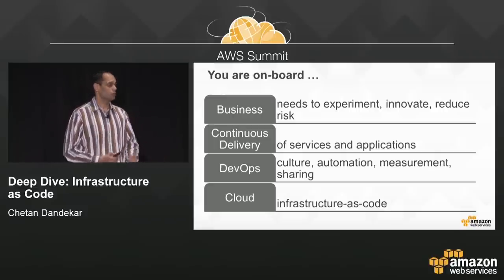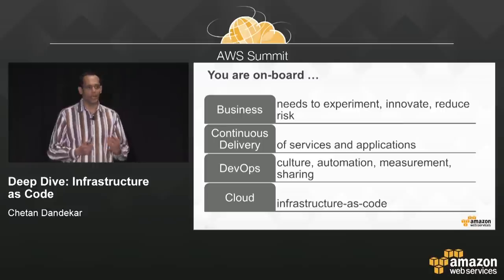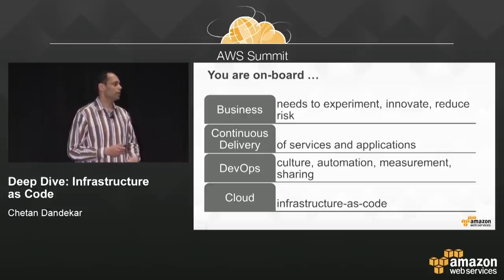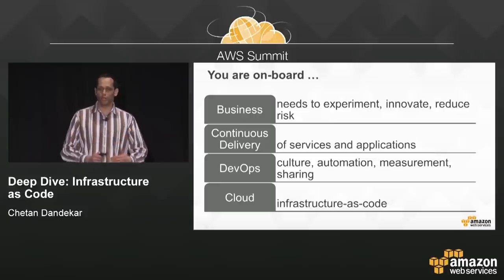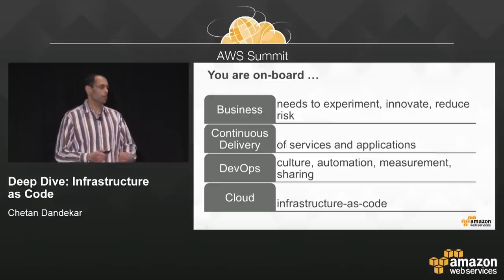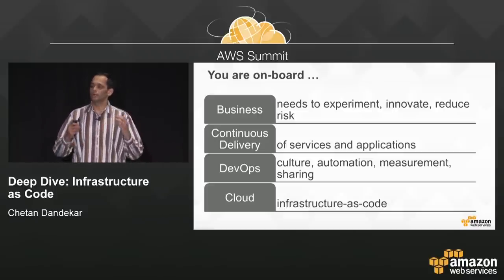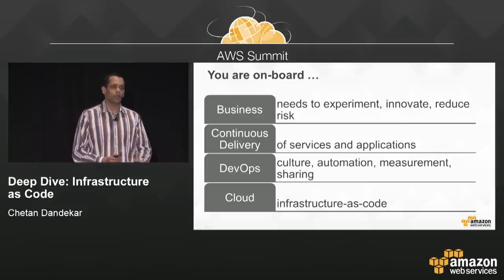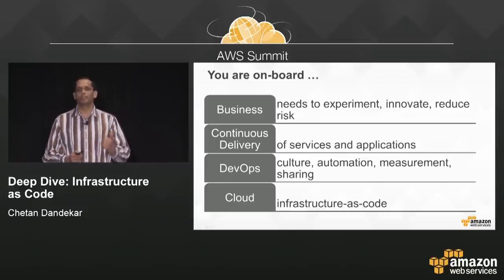The DevOps movement supports continuous delivery because there is good communication, sharing, and automation, which allows you to be agile — to double down on things that are working and eliminate things that are not. Infrastructure as code in particular, and cloud in general, supports DevOps because you can automate everything. You can treat everything as software — even servers, databases, or networking components — and automate their management.